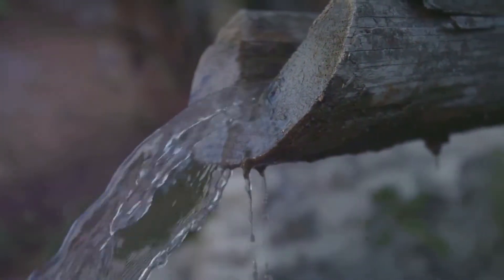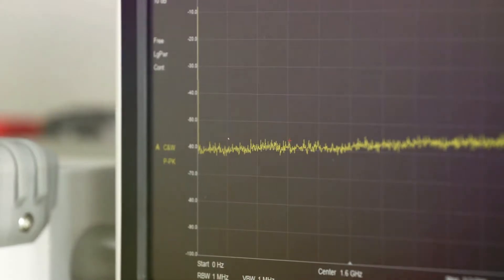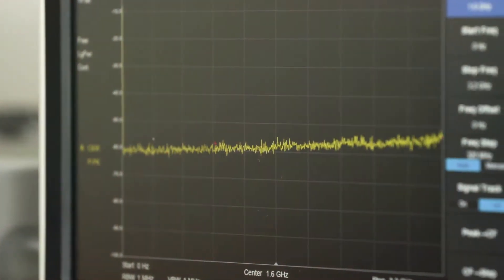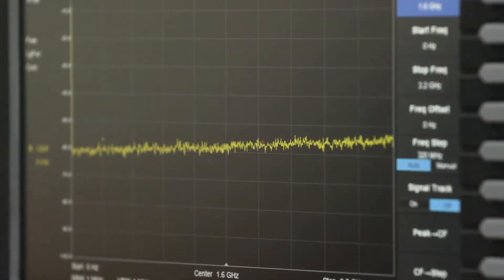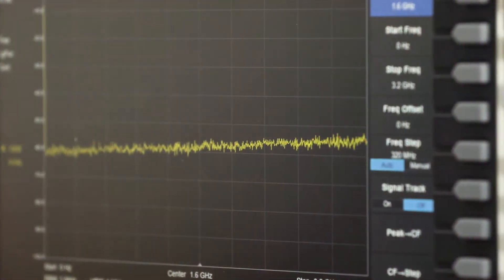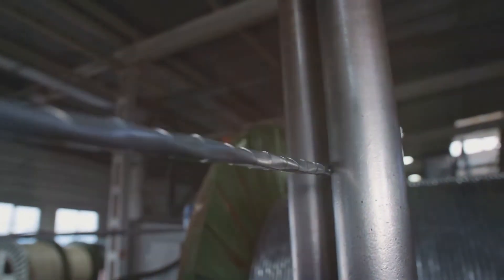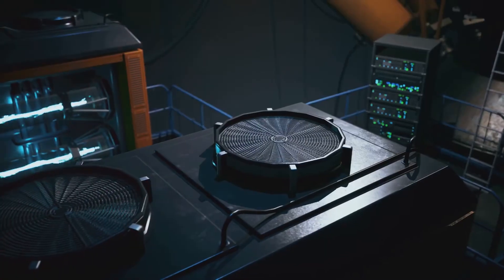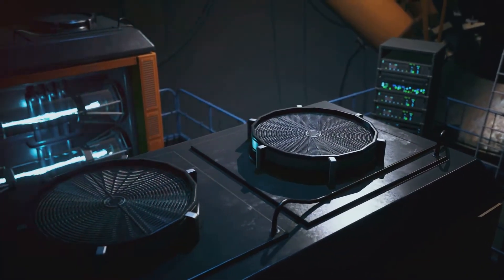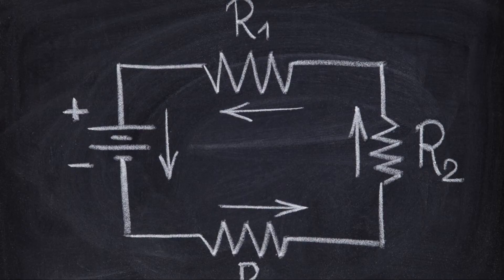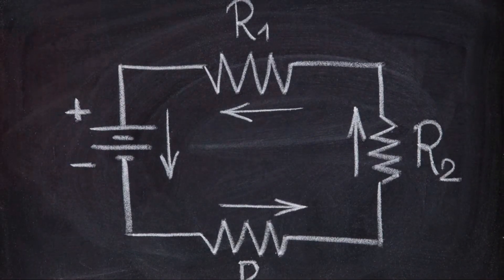This analogy helps us visualize how these elements interact in a circuit. Ohm's law tells us that the current flowing through a conductor is directly proportional to the voltage applied across it and inversely proportional to the resistance. Mathematically, this is expressed as I = V/R. This means that if you increase the voltage, the current increases, provided the resistance remains constant. Conversely, if you increase the resistance, the current decreases, assuming the voltage stays the same.